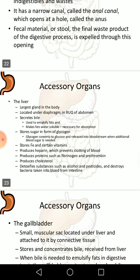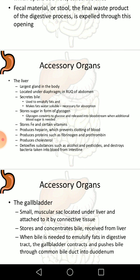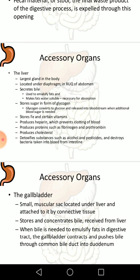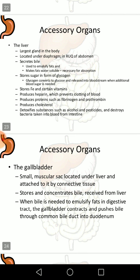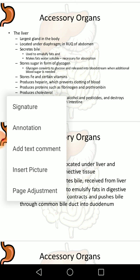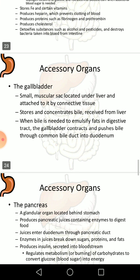The liver is an accessory organ and the largest gland in the body, located under the diaphragm. It secretes bile used to emulsify fats, stores sugar in the form of glycogen which is converted to glucose for utilization, stores iron and certain vitamins, produces heparin which prevents blood clotting, produces proteins such as fibrinogen and prothrombin, produces cholesterol, detoxifies substances such as alcohol and pesticides, and destroys bacteria taken into the blood from the intestine.